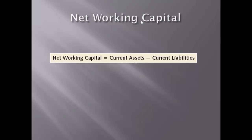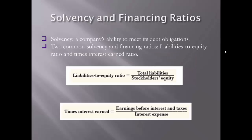It is also important to compare the liquidity ratio calculated with the liquidity ratio for firms in that industry. The first solvency and financing ratio we will consider is the liabilities to equity ratio, also referred to as the debt to equity ratio. This ratio indicates the extent of reliance on creditors rather than owners in providing resources, and is calculated by dividing total liabilities by total shareholders' equity. It indicates the extent of trading on financial leverage.